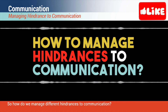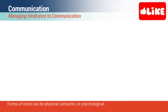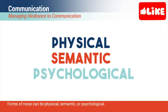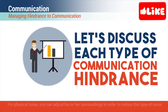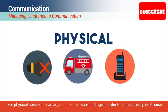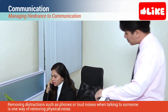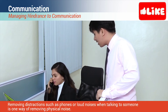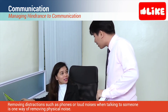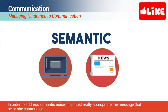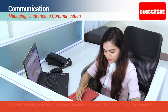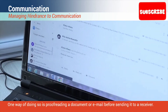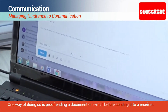To manage different hindrances to communication, forms of noise can be physical, semantic, or psychological. For physical noise, one can adjust his or her surroundings in order to reduce this type of noise. Removing distractions such as phones or loud noises when talking to someone is one way of removing physical noise. In order to address semantic noise, one must really appropriate the message that he or she communicates. One way of doing so is proofreading a document or email before sending it to a receiver.